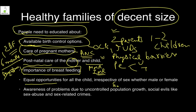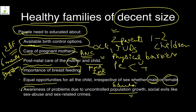Equal opportunities must be provided in education and health for both males and females. A female child should not be discriminated against — she should be sent to school and given proper nutrition, immunization, and health checkups. Due to population growth, people need awareness of the problems that will arise.